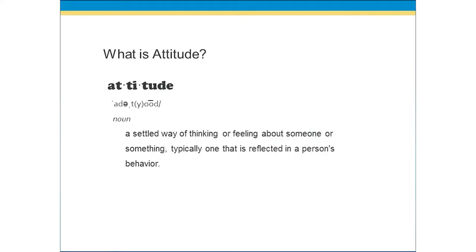So what is attitude? When we hear the word attitude, the first thing we think of is maybe some negative attitudes or negative behaviors that we've seen by others. Let's look at this definition. Attitude is a settled way of thinking or feeling about someone or something, typically one that is reflected in a person's behavior. What this means is that our attitude is generated by what we believe, and it's actually going to come out through our behaviors — that is what we see as attitude.